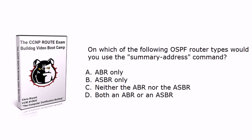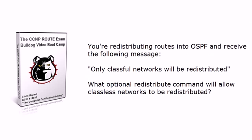The same goes for the `summary address` command — can we use it for summarization on an ABR, an ASBR, both, or neither? And then finally, a classic: you're redistributing routes into OSPF and you see the message 'only classful networks will be redistributed.' Generally we want all networks redistributed and filter on an as-needed basis. What optional command with redistribute will allow classless networks to be redistributed?